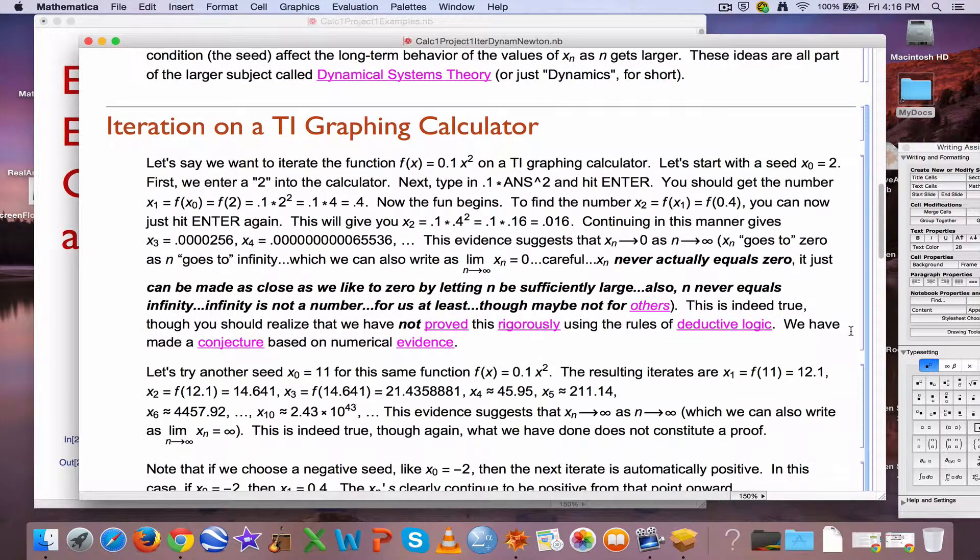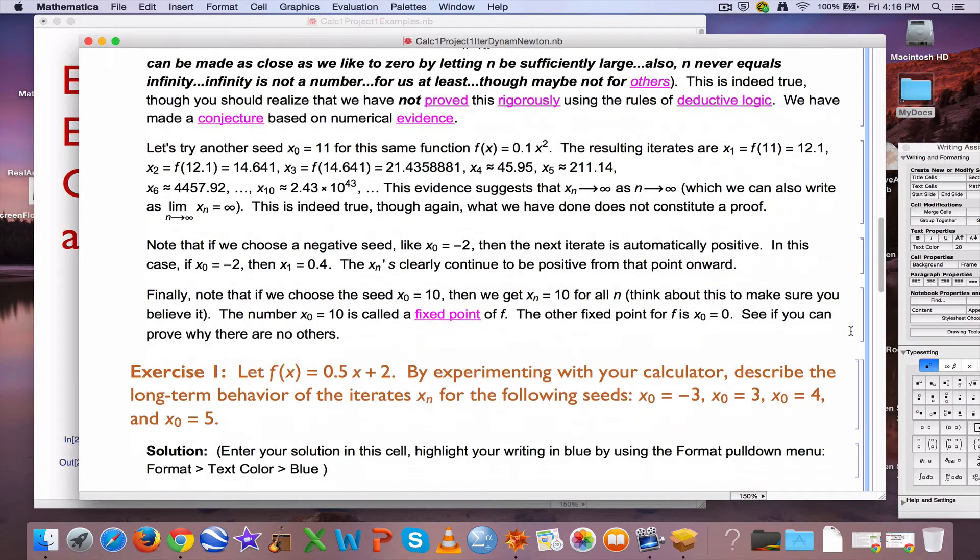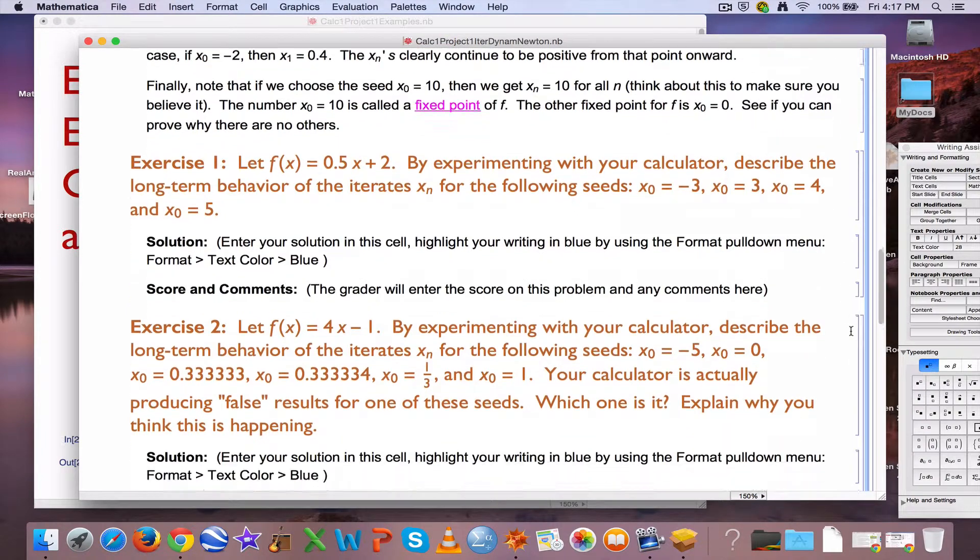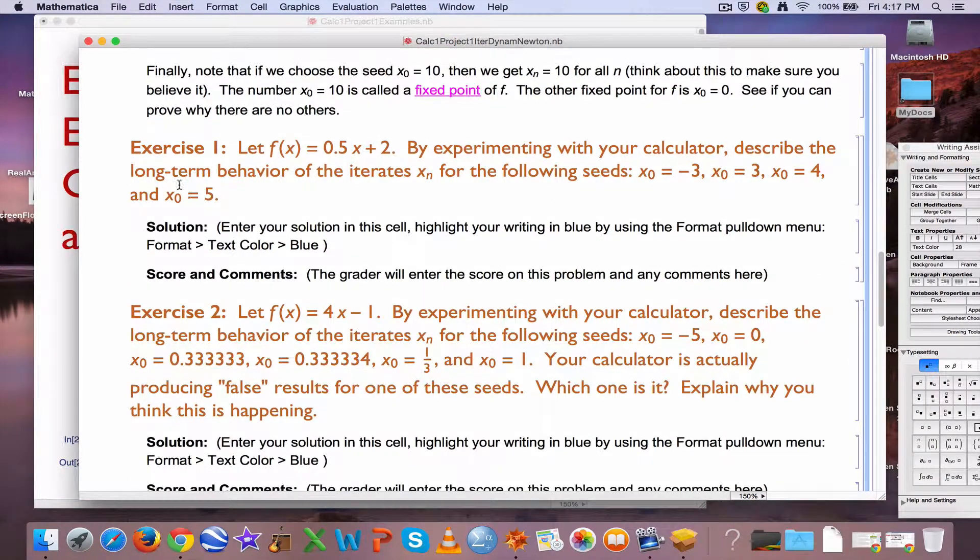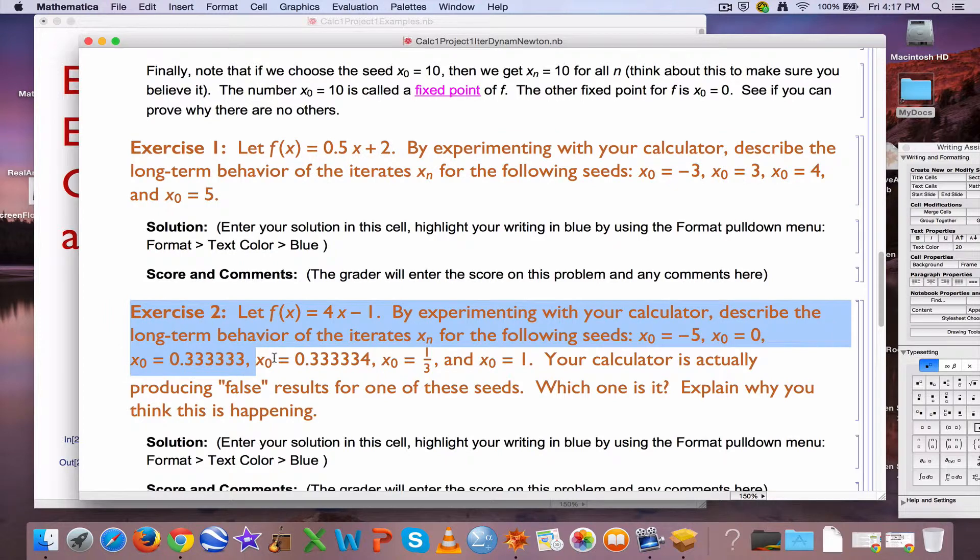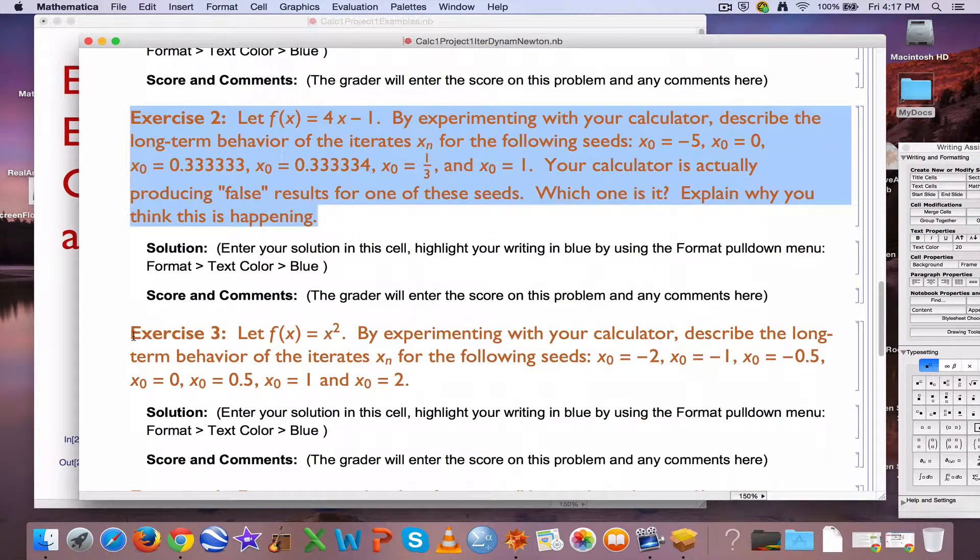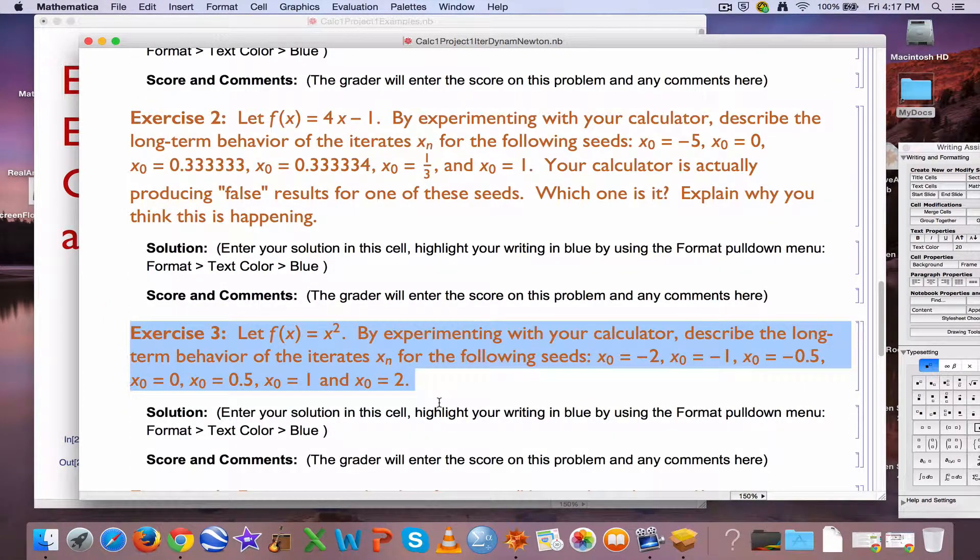Graphing calculators often can do something similar pretty easily. The ANS feature on a TI graphing calculator can help you verify what you see here, and you should try that if you haven't yet. In the first video, we thought about examples similar to exercises 1 and 2 that you see here. In this video, we'll do an example somewhat similar to exercise 3 that you see here, although the example we'll do is actually more complicated than what you see here.